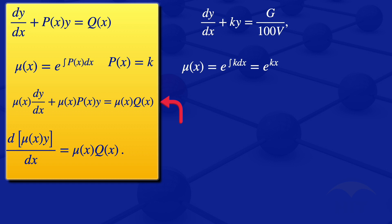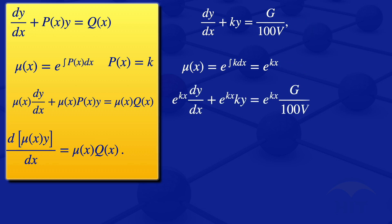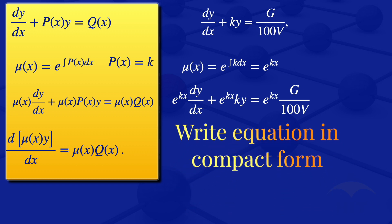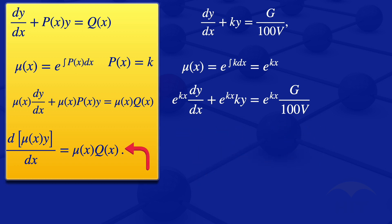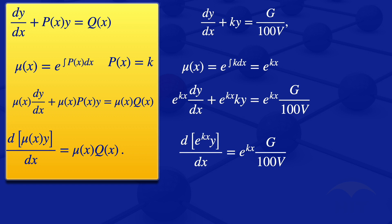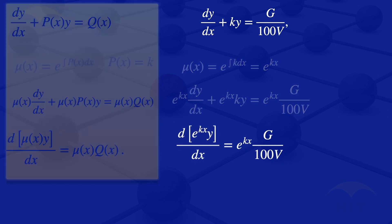The next step is to multiply the given equation by the integrating factor. We have: exponent of kx times the derivative of y with respect to x, plus exponent of kx times ky, equals exponent of kx times g divided by 100v. Writing the left-hand side in compact form, we get: the derivative of exponent of kx times y with respect to x equals exponent of kx times g divided by 100v.